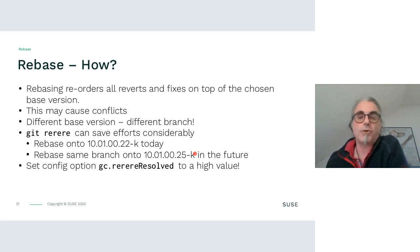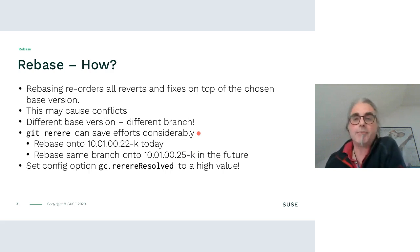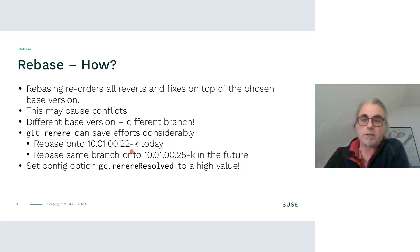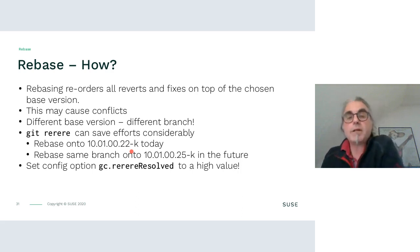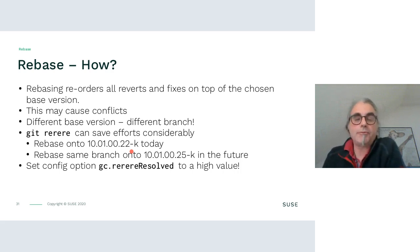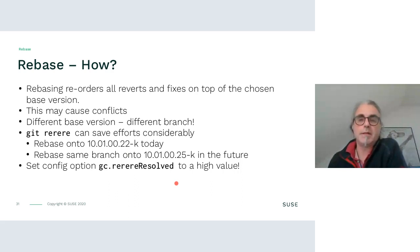Of course, the rebase may cause conflicts — unfortunately, repeatedly. The git rerere tool is quite helpful here because the operations are pretty similar: if I rebase my tree onto driver version 10.01.0.22 today and I need to rebase to a newer upstream release in the future, the conflicts will be very similar and git rerere helps repeat the same conflict resolution. It's important to set the 'gc.rerereResolved' option to a rather high value so that these conflict resolutions are remembered over a long time. This is a non-standard git workflow — normally the value is smaller.